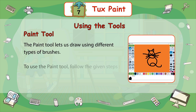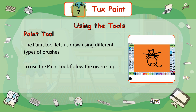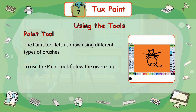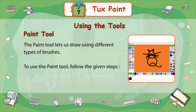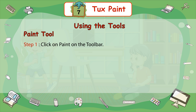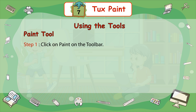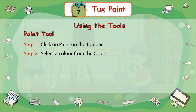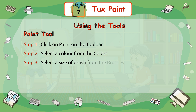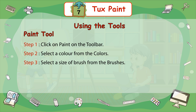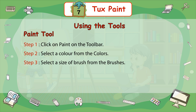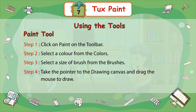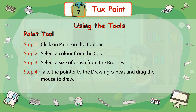Paint tool. The Paint tool lets us draw using different types of brushes. To use the Paint tool, follow the given steps. Step 1: Click on Paint on the toolbar. Step 2: Select a color from the colors. Step 3: Select a size of brush from the brushes. Step 4: Take the pointer to the drawing canvas and drag the mouse to draw.